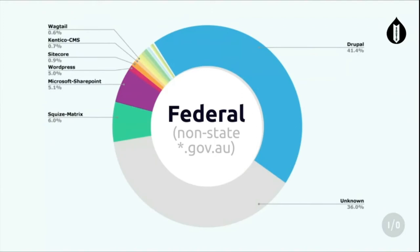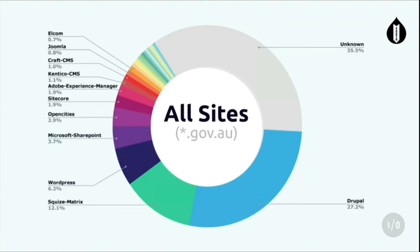So this is probably more interesting - this is excluding state-based sites and including the .gov.au top level. And I thought this was quite neat, probably largely due to the woman sitting in the second row. We've got 41% sitting with Drupal. Squiz and SharePoint roughly coming up rear. And this is every single site bashed together in one super graph, with an extremely long tail.